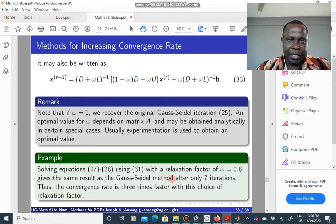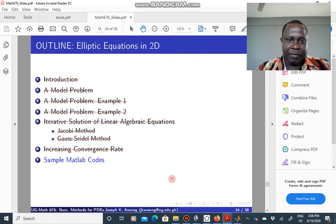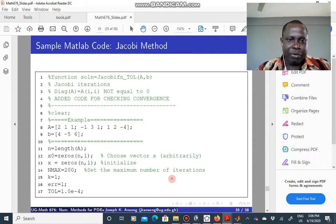So basically, that is where we'll end. You would see some sample MATLAB codes. The first one is the Jacobi method, which is coded here basically. So this is the example that I have shown in the presentations. Your matrix A is given by this, B is this.